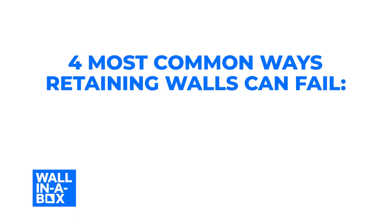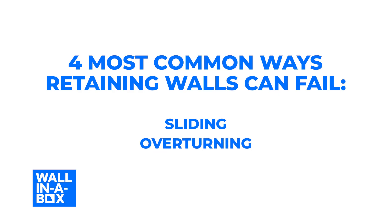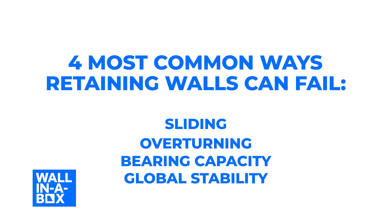The four most common ways that retaining walls can fail are in sliding, overturning, bearing capacity, and global stability. Using a small visualization tool we affectionately call Wall in a Box, we're going to show you what these different failure modes actually look like.